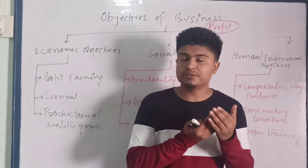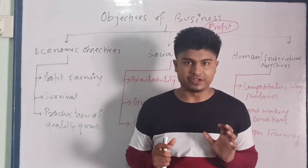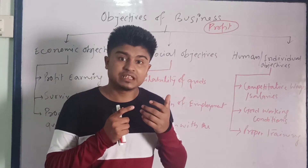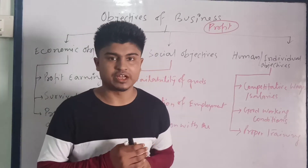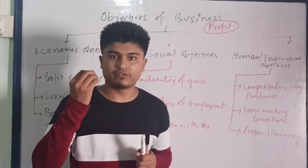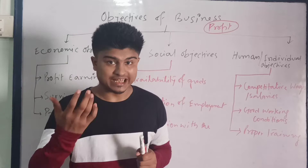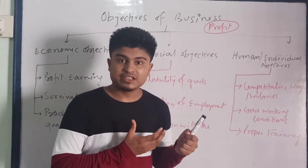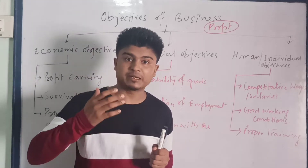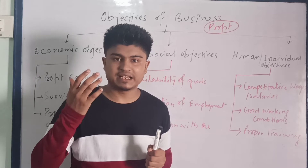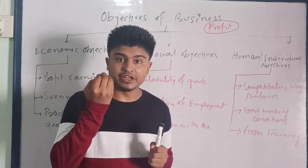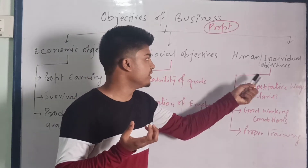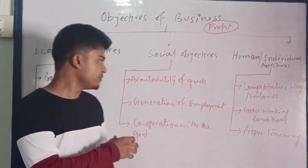Economic objectives are those where money is engaged — the underlying reason is money or profit. Social objectives are those related to society — when a business performs activities for the welfare of society. Human or individual objectives are when an organization cares for its employees or makes decisions for the welfare of the individuals or human resources working in the organization.